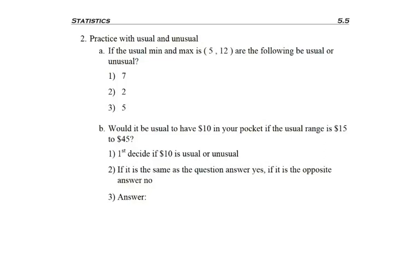Now let's do some practice with usual and unusual values. In problem A, we're told the usual range is five to twelve — are the following numbers usual or unusual? The number seven would be usual, since seven is inside the range. How about two? Two is outside our range, so it's unusual.